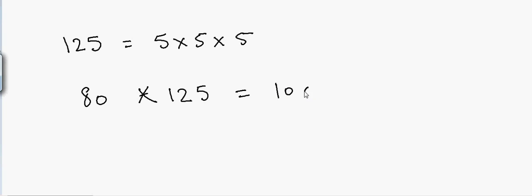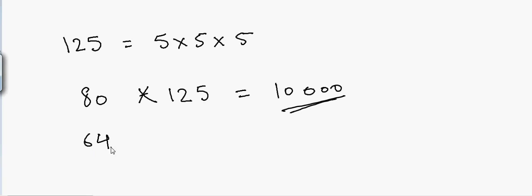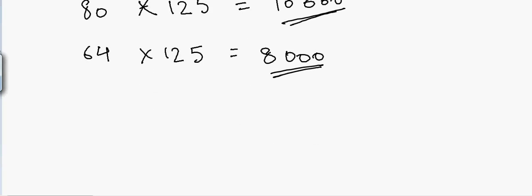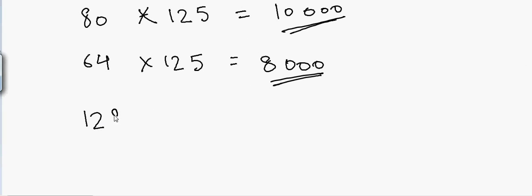Let's take another example: 64. We know that 8 times 8 is 64, so if I multiply 64 by 125, that equals 64 divided by 8, which is 8, and then put three zeros at the end: 8000. And another example — 128 times 125: 128 divided by 8 is 16, and then put three zeros at the end, so the answer is 16000.